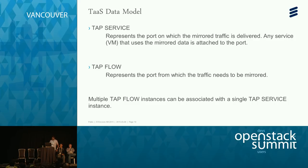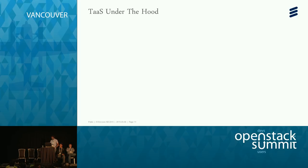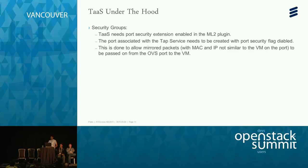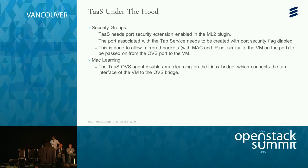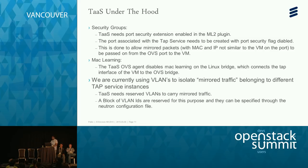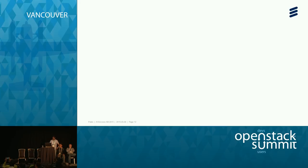There are security considerations, particularly around security groups. The port security extension must be enabled in the ML2 plugin, and the destination port must be created with port security disabled — this allows the port to receive and forward traffic intended for a different MAC/IP pair. We also had to disable MAC learning on the Linux bridge connecting the tap interface to OVS. Currently we use VLANs to isolate traffic between different tap service instances, requiring a reserved range of VLAN IDs specified in neutron.conf.